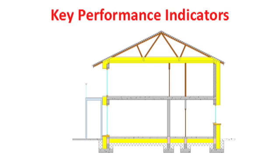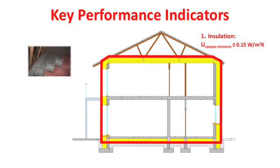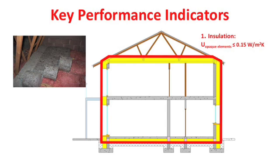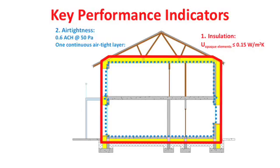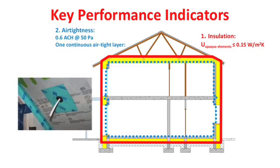We're also going to show you the cross section of a building which shows the typical numbers that we need — for example, in terms of U-value, in terms of airtightness, the type of glazing that we have to use, and so forth.